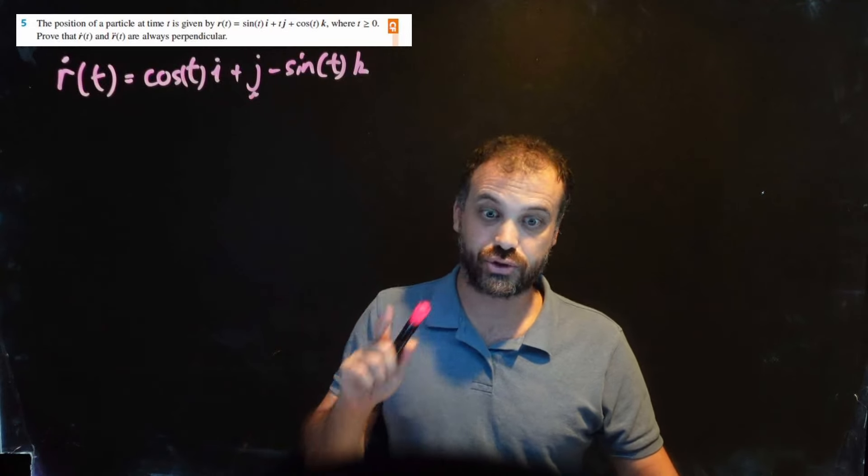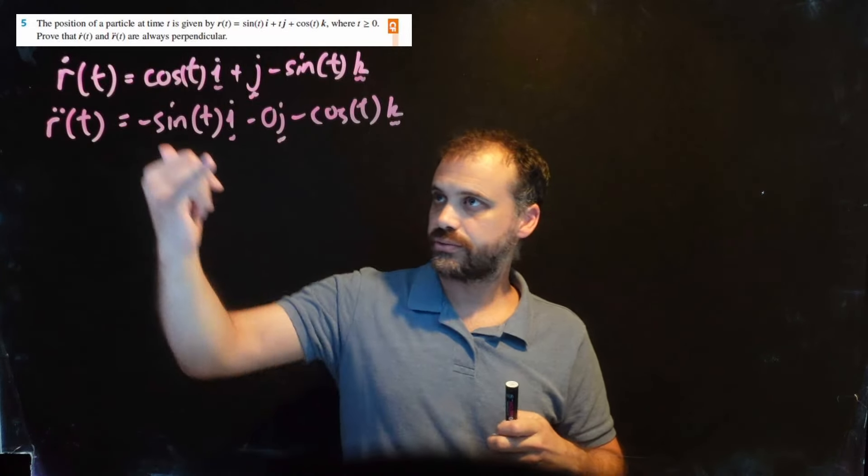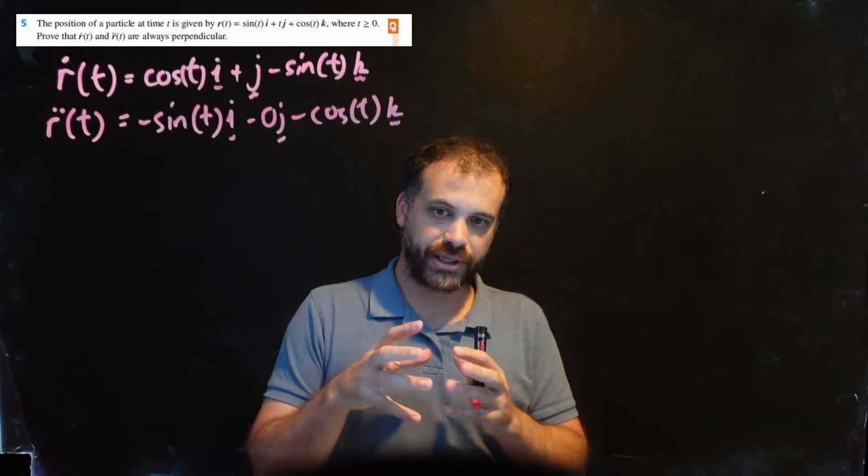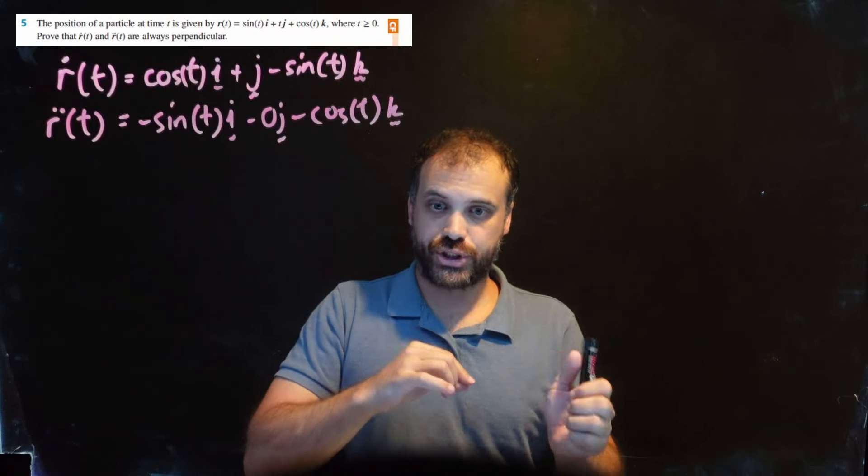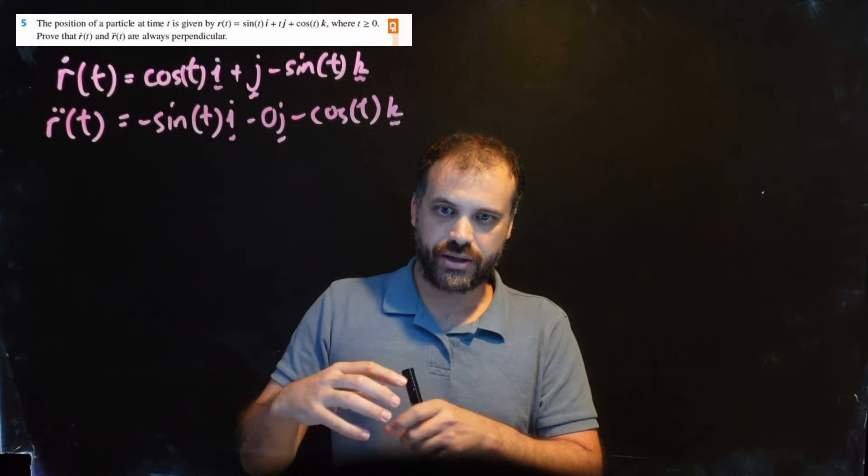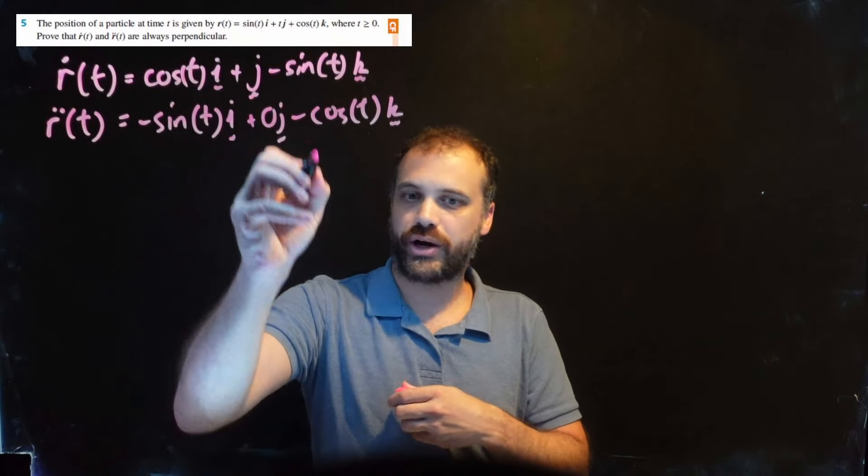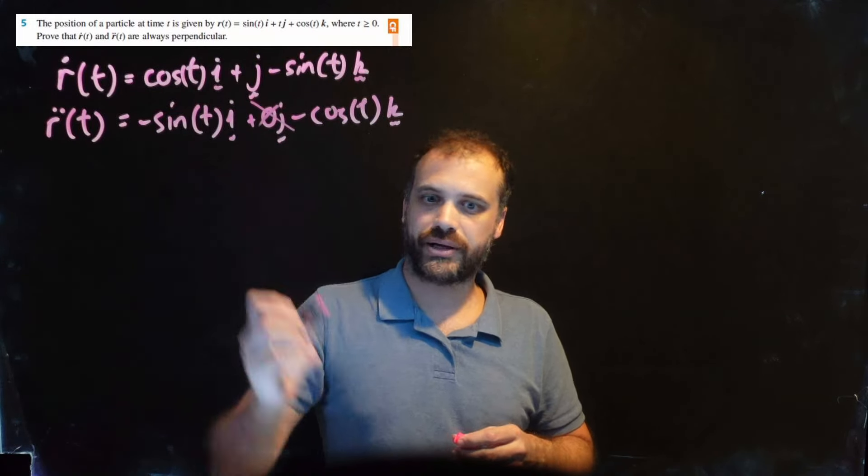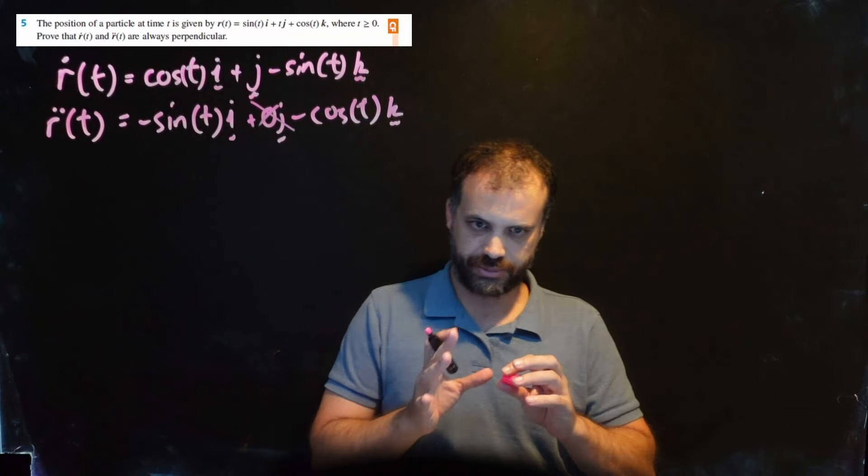Then we need to find the derivative of that for acceleration. Pretty straightforward. Again, you need to be careful - the derivative of j is 0j. There's no real need to write it up there, but it is going to be useful for me in the next bit.